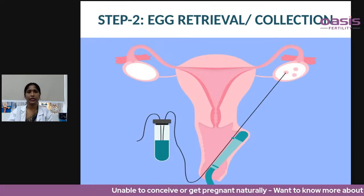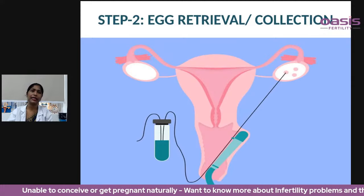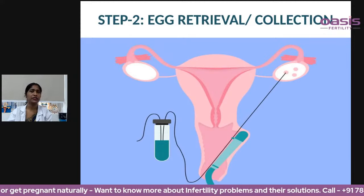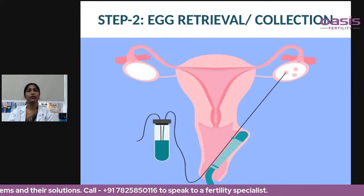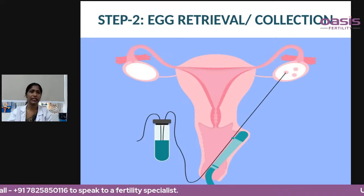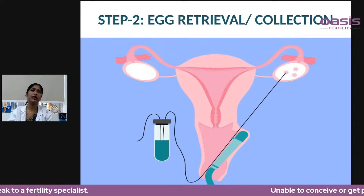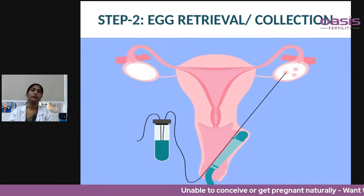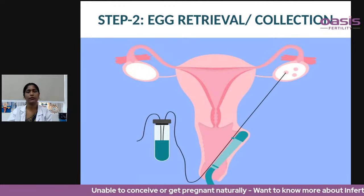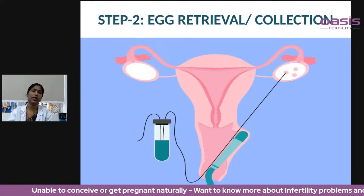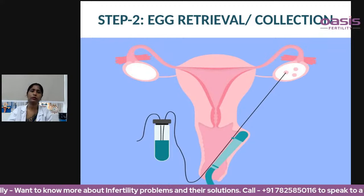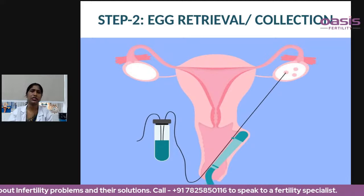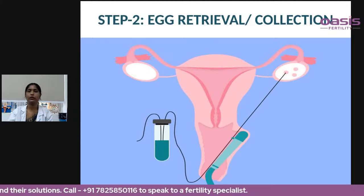Once the follicles reach a particular size, a trigger injection is given — this is the final injection of the IVF cycle. Then, 34 to 36 hours later, egg retrieval is performed. This procedure is done under general anesthesia and takes 15 to 30 minutes. The woman stays for two to three hours in the observation room and can go home the same day. The procedure is done vaginally — there is no abdominal cut.